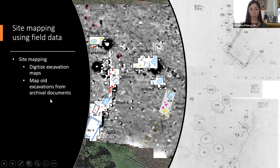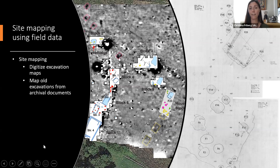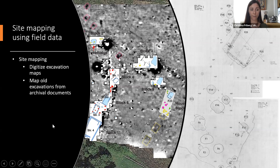You can also map old excavations from archival documentation, which I have on the left. In this image, there are at least five different layers of information overlaid on top of each other — which is the beauty of GIS. We can see all at once: the aerial imagery, the old excavations, the gradiometry collected before excavations, outlines of the anomalies observed, and the new excavation area — all digitized, all in one map.